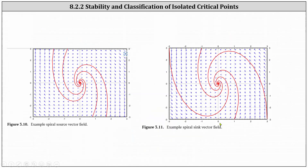For two more examples, on the left we have an example of a spiral source vector field. Starting at the origin, notice how the vectors spiral out from the origin. And on the right, we have an example of a spiral sink vector field. Notice how the vector field spirals in toward the origin.